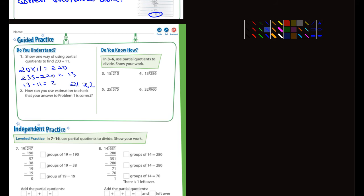And then it says, how can you use estimation to check that your answer to problem 1 is correct? Well, that's easy. That's going to be 21 times 11, and then you could actually add in a plus 2. And you're going to end up with 231 plus 2 equals 233. All right.